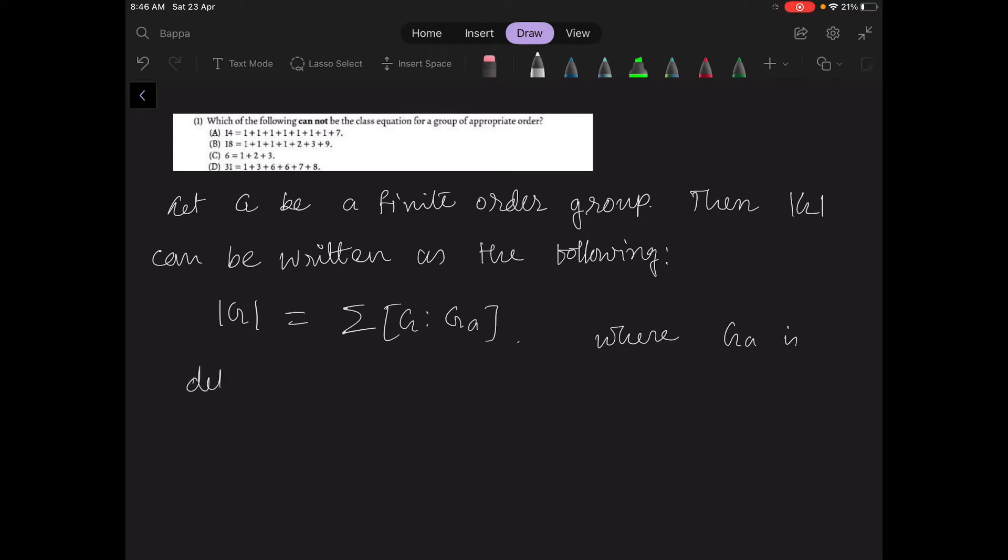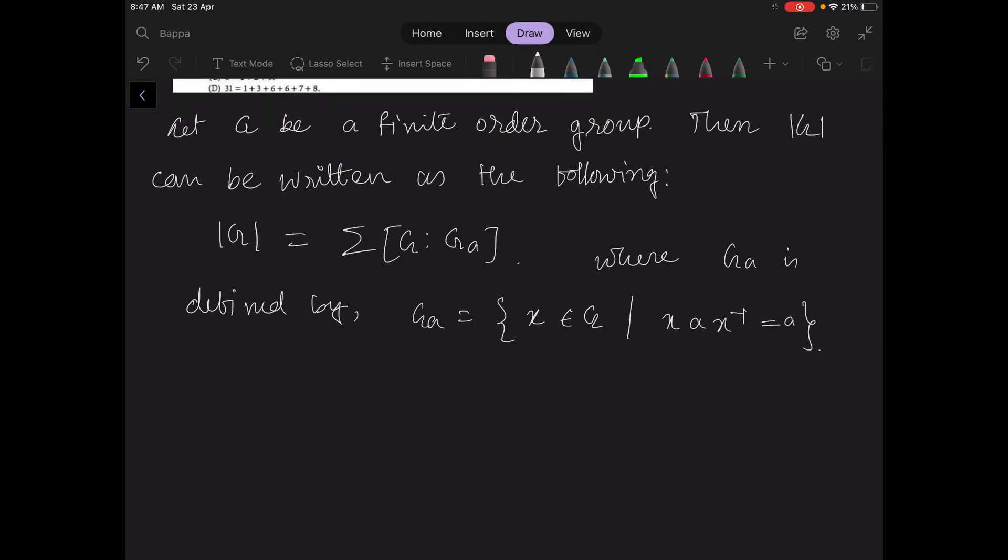This is the stabilizer of a. Now if |G| mod |G_a| is equal to 1, that means G_a is equal to G, so then this a belongs to the center.